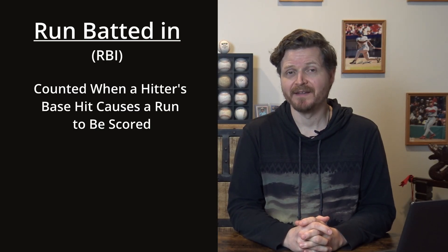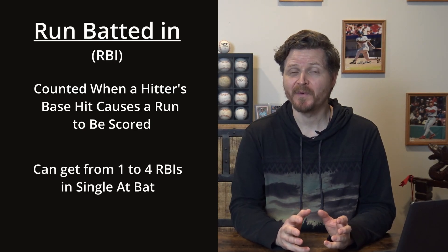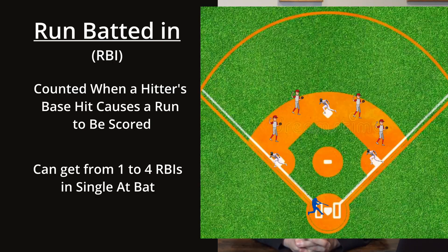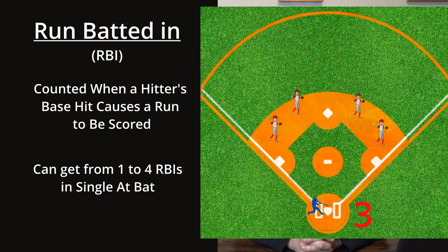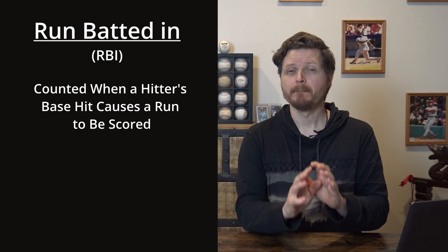The RBI is awarded to the player that was at bat and hit the ball. It's possible in one single at bat to get anywhere from one RBI to four RBIs — if that player hits a home run with the bases loaded, all three base runners plus the batter himself score runs. For most runs scored, a run is credited to the player who scored, and an RBI to the player who caused that run to score. Exceptions include when a runner steals home, or scores on a wild pitch, a passed ball, or an error.